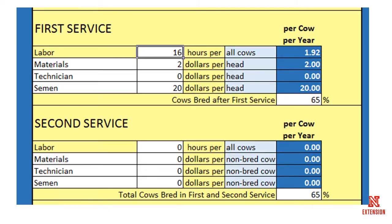This next segment looks at comparing first service conception and second service conception and allows us to put in values for that. In this example, we're going to AI the cows once and then put a bull out with them. The spreadsheet also has an option if you're going to AI repeats to put in second service expected expenses as well, based on the number of cows that did not get pregnant in the first service. In this example, we only used one round of AI expected to get a 65% pregnancy rate, so we enter 65% in the second service field as the total cows expected to be bred.